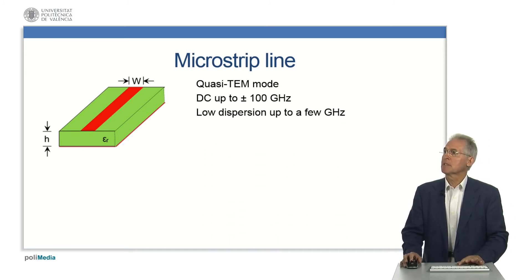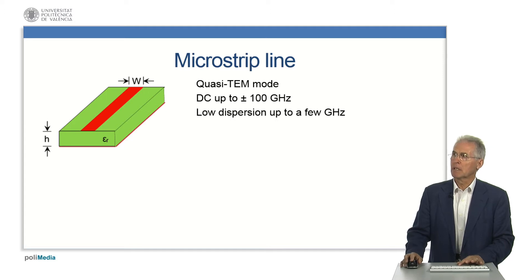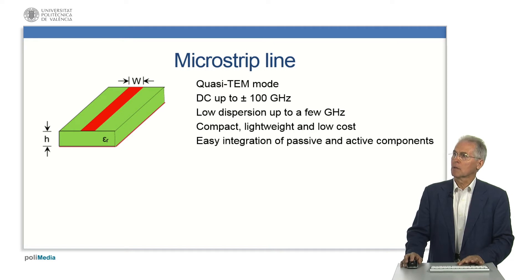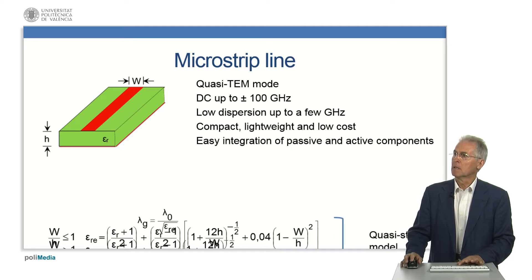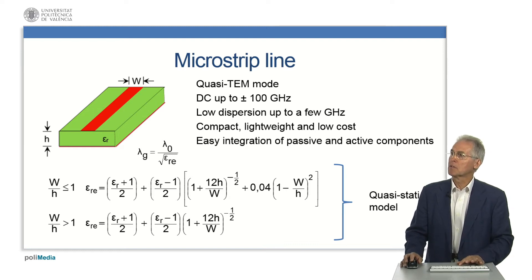It supports a quasi-TEM mode and can guide signals from DC up to approximately 100 GHz. It is non-dispersive up to a few GHz. It is compact, lightweight, and low cost. Moreover, it is easy to integrate in passive and active components.